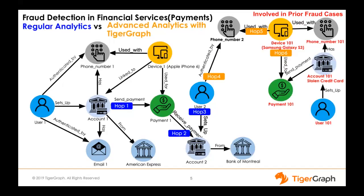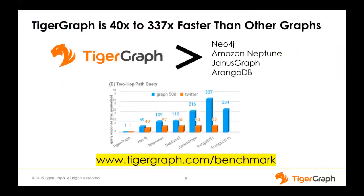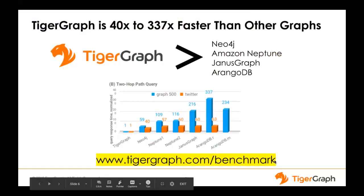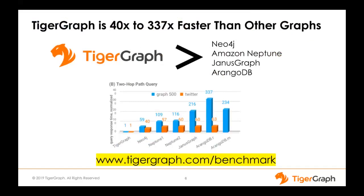That's what we do for many of our customers, including the largest banks in the world. Four out of five of the largest banks use TigerGraph for fraud detection. In terms of performance, we are about 37 to 40 times faster than other graph databases — which means lower cost of ownership, less hardware needed, and the ability to do things in real time with large datasets that you can't do with other graph databases.